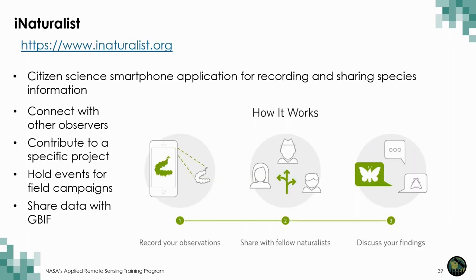iNaturalist is a relatively new source powered by citizen science. In particular, this is a smartphone application that has led to a surge in contributed observations and now accounts for a large percentage of new species occurrence observations. As a citizen scientist, you can connect with other observers, contribute to a specific project, and even hold field campaigns. These observations are vetted for quality by experts. iNaturalist also shares data with GBIF.